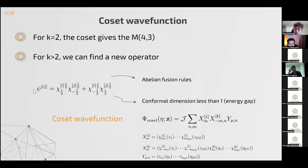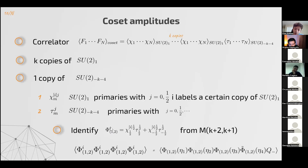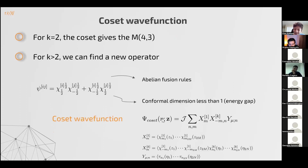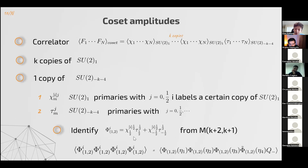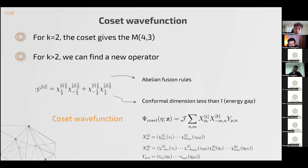Using this new operator, we can construct a coset wave function for 2n φ_{i,1,2} operators and 2m of the new abelian operators. This gives a generalized wave function with the desired properties.